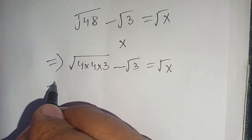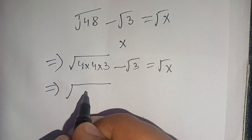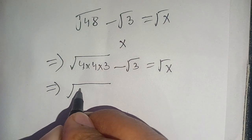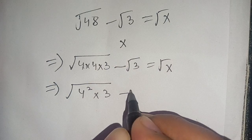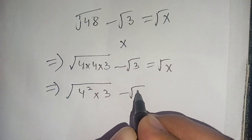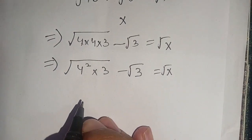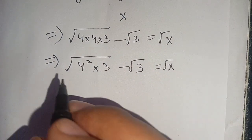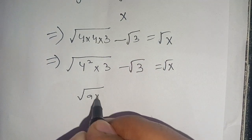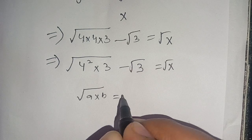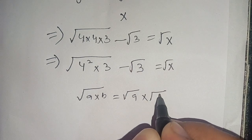In the next step, we can write square root of 4 times 4 as 4 power 2 times 3, minus square root of 3, is equal to square root of x. We know that square root of a times b is equal to square root of a times square root of b.